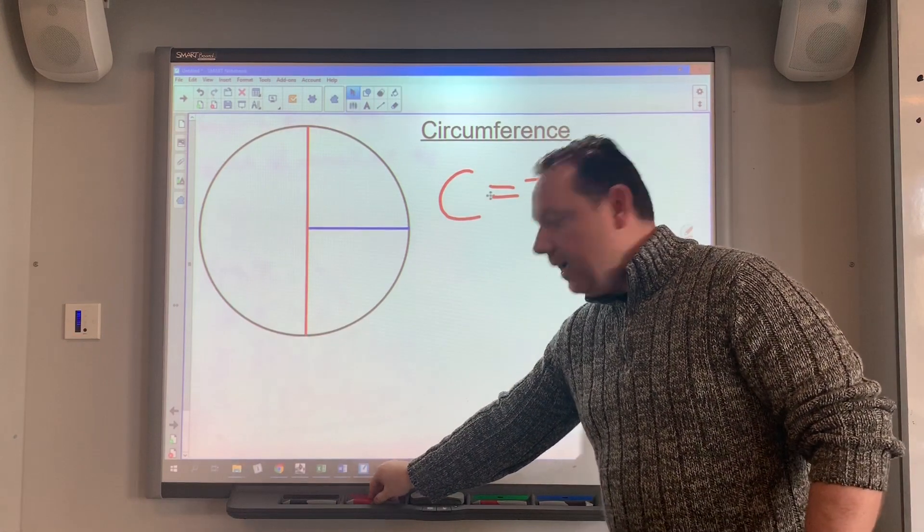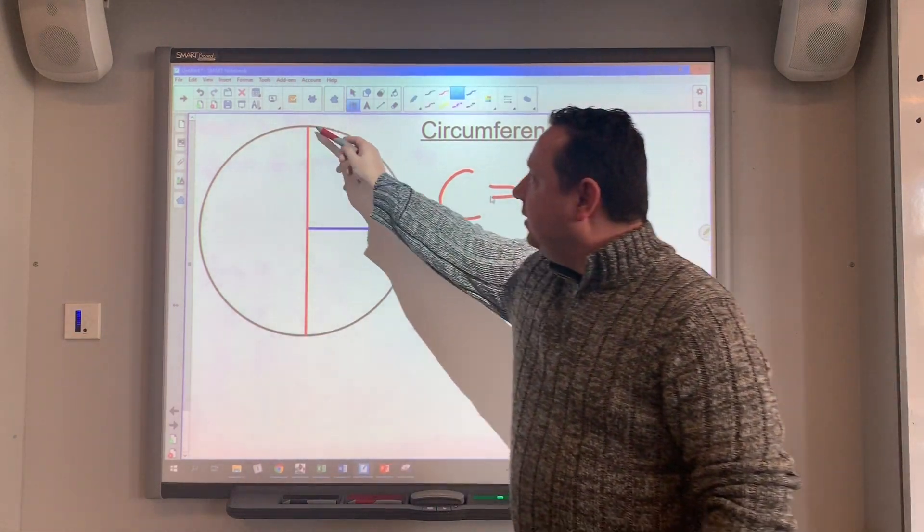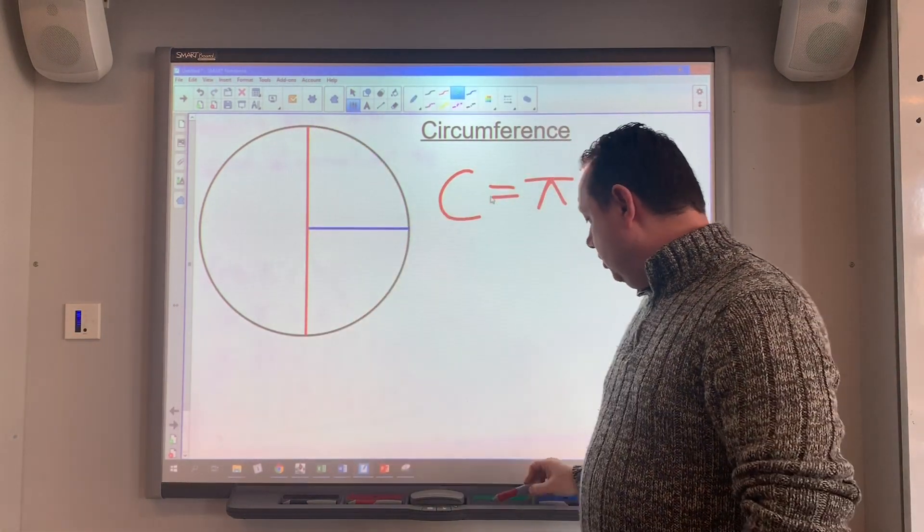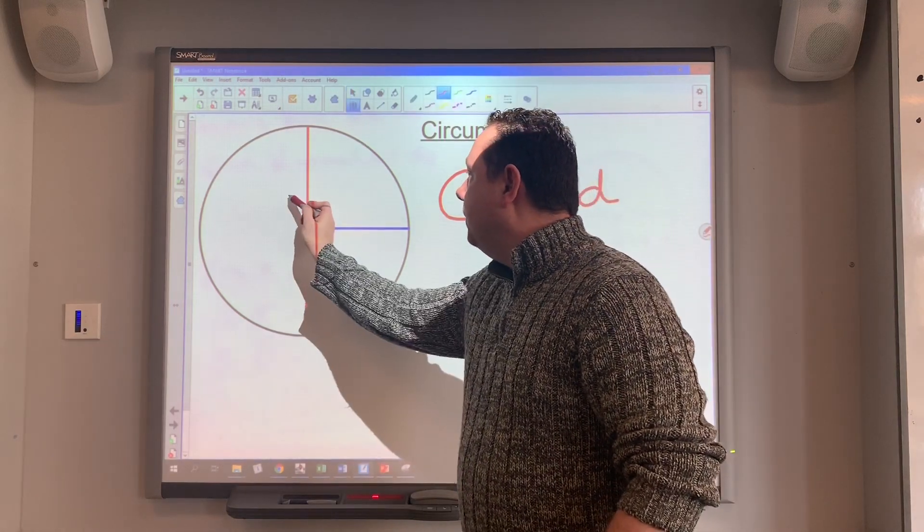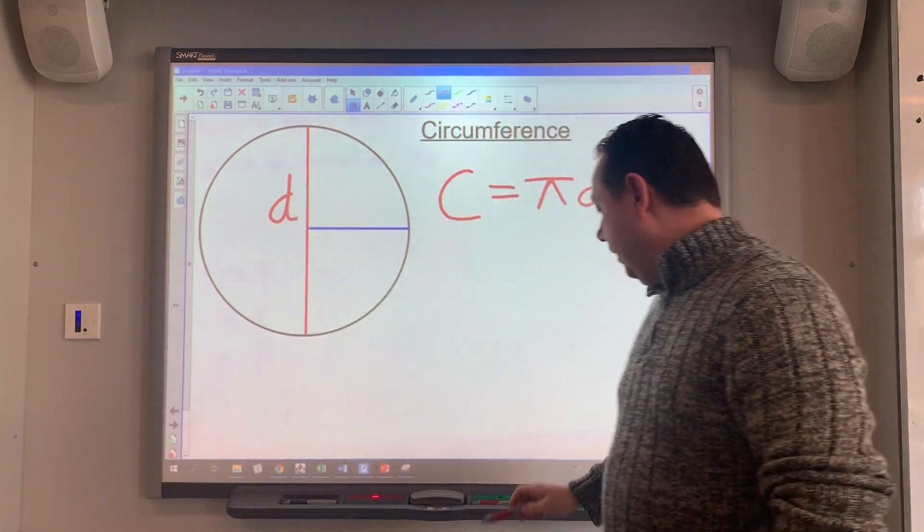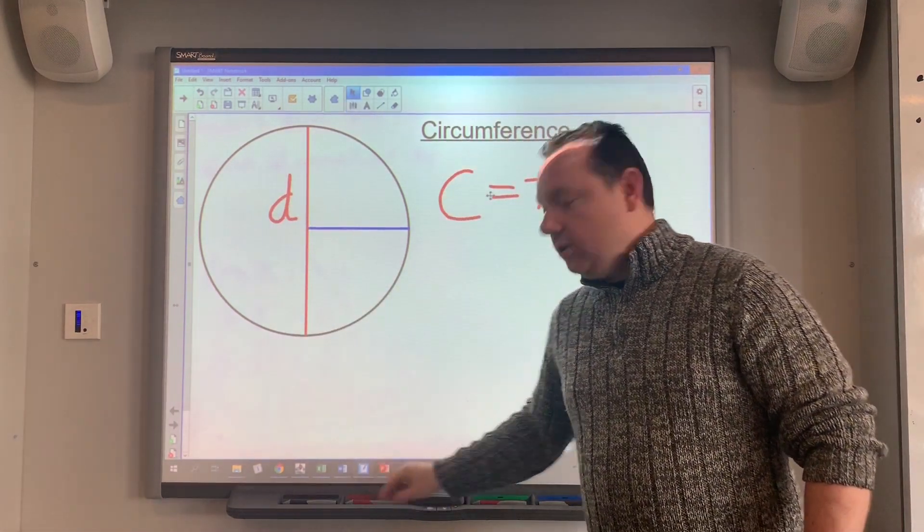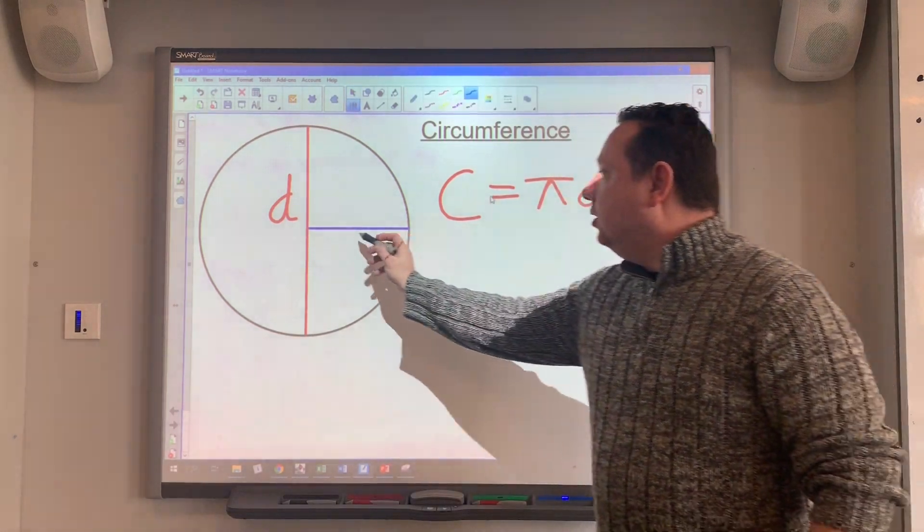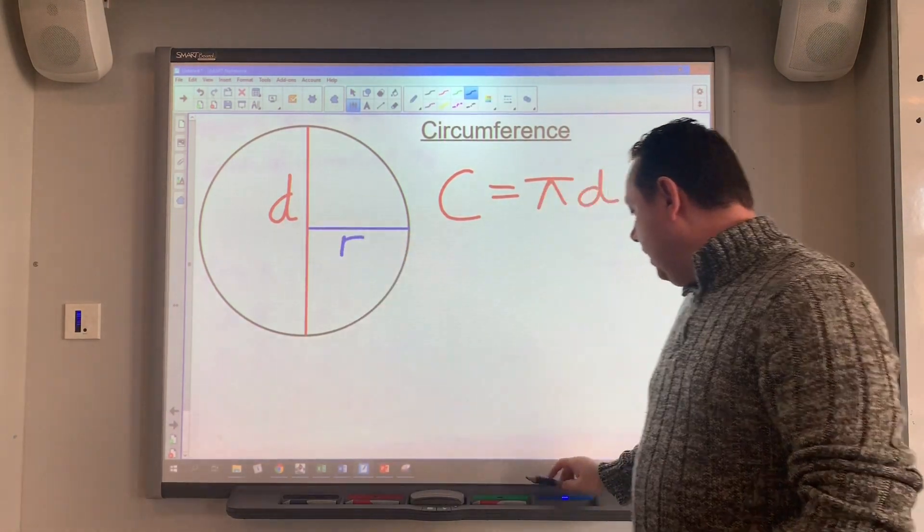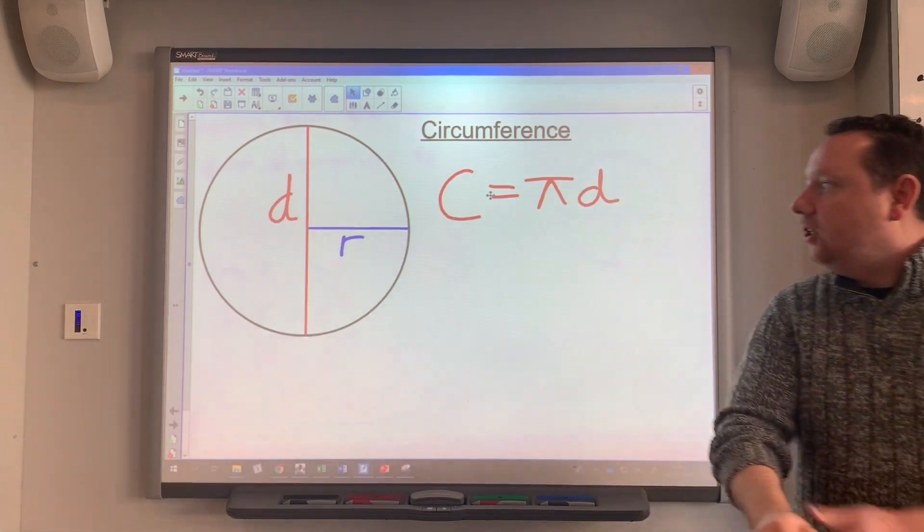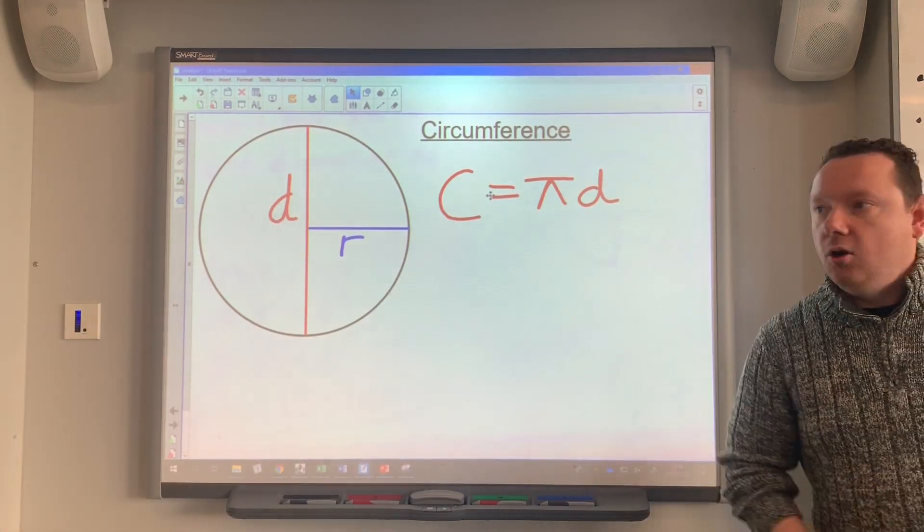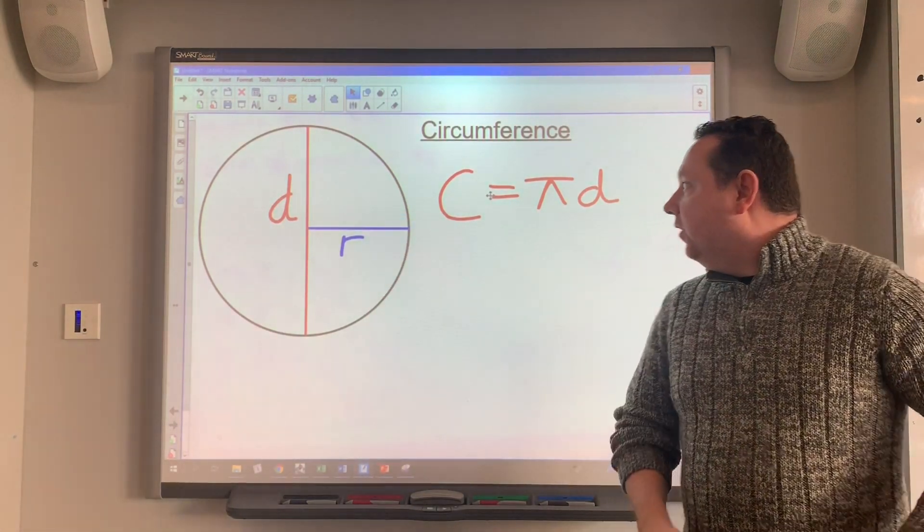So our diameter, remember, is just the distance all the way across the middle of the circle. So there's my diameter here in red, and the other line that I've noted on the circle is the radius, which is the blue line here. And obviously I can switch between one and the other because the diameter is double the radius.